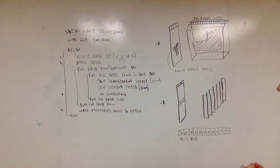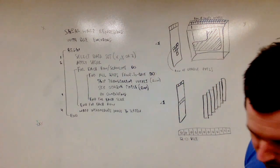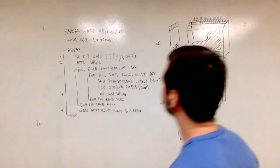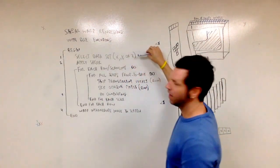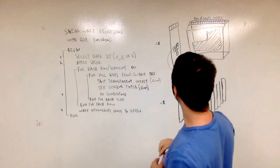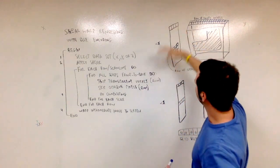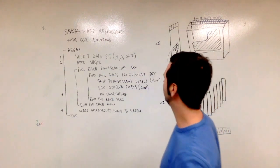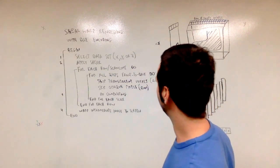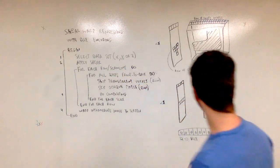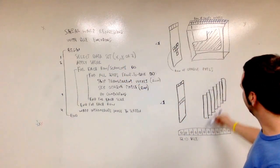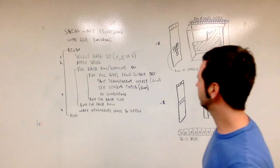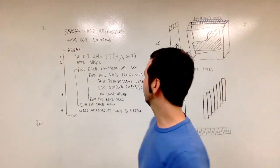So the shear warp factorization algorithm, this is the pseudo code. Start, select the data set that corresponds to transforming the viewpoints to be orthogonal to the data set, apply a shear. That's this step of shearing the data set in three-dimensional space. And then there are two for loops.